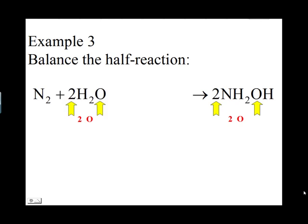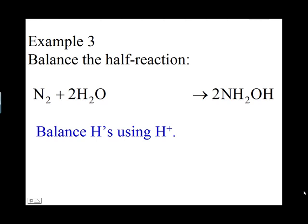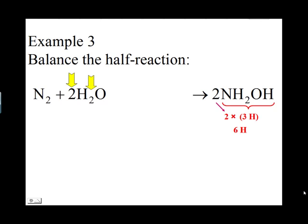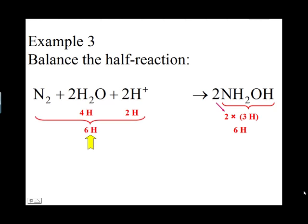Now balance the H atoms using H+. On the right side, each NH2OH molecule has three H atoms, and with a coefficient of two there are six hydrogen atoms total. On the left side, two water molecules have four H atoms, so you need to add two more H atoms by adding two H+ ions. The left side now has a total of six H atoms, equal to the six on the right.